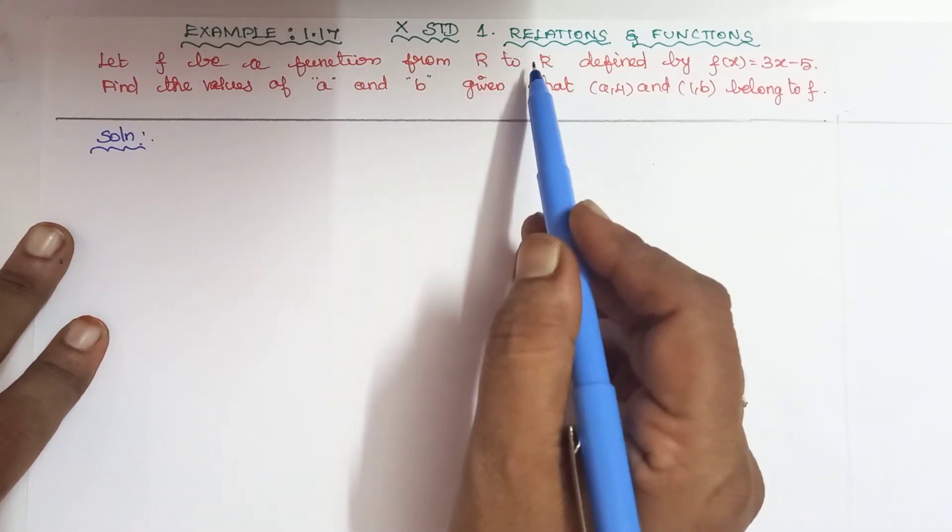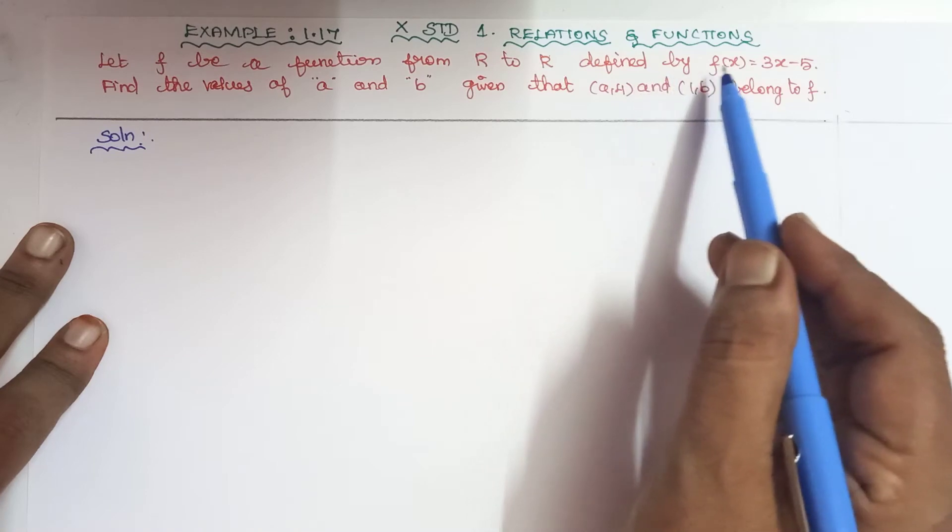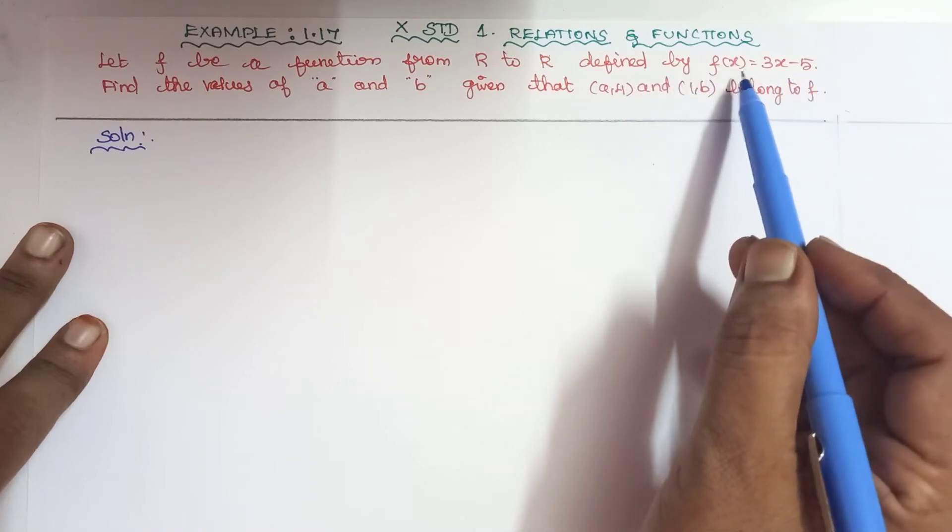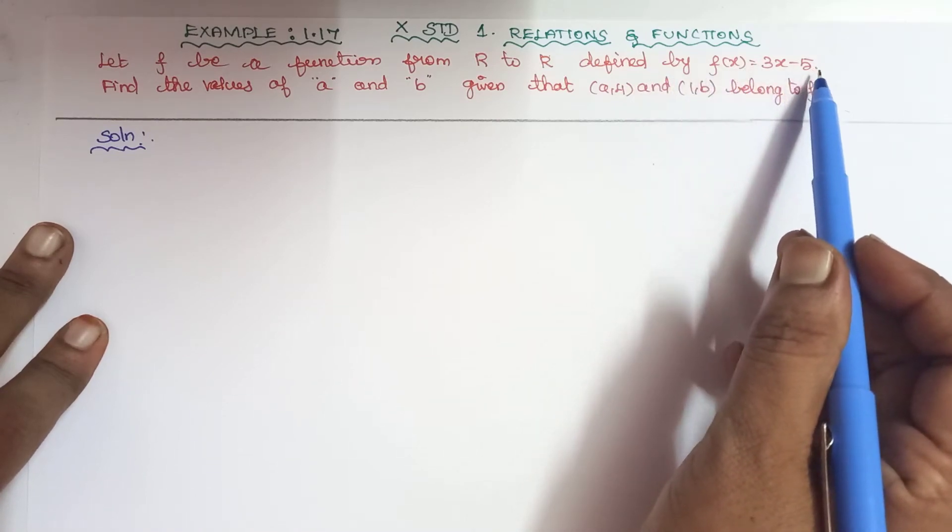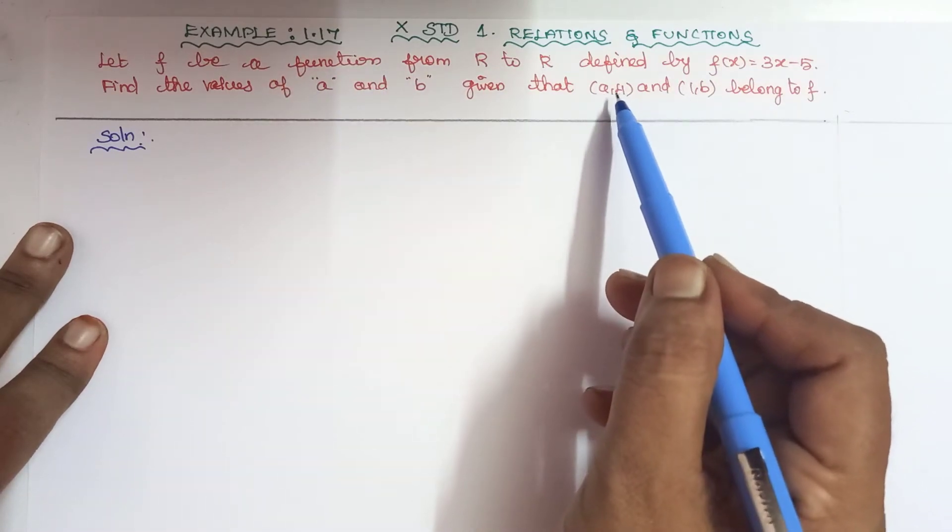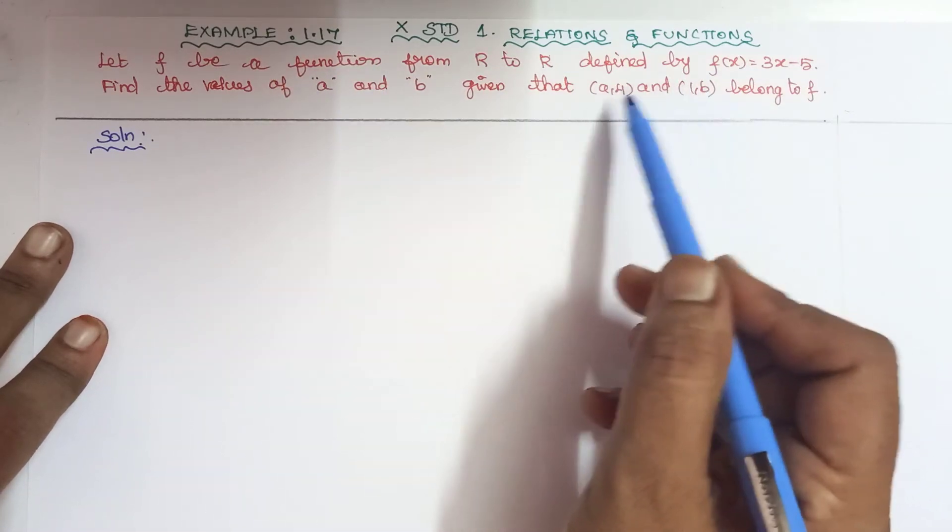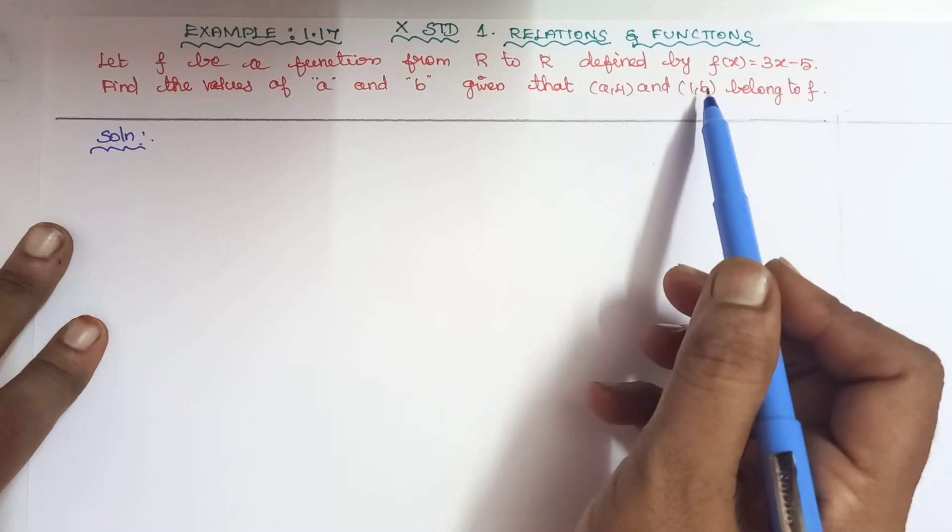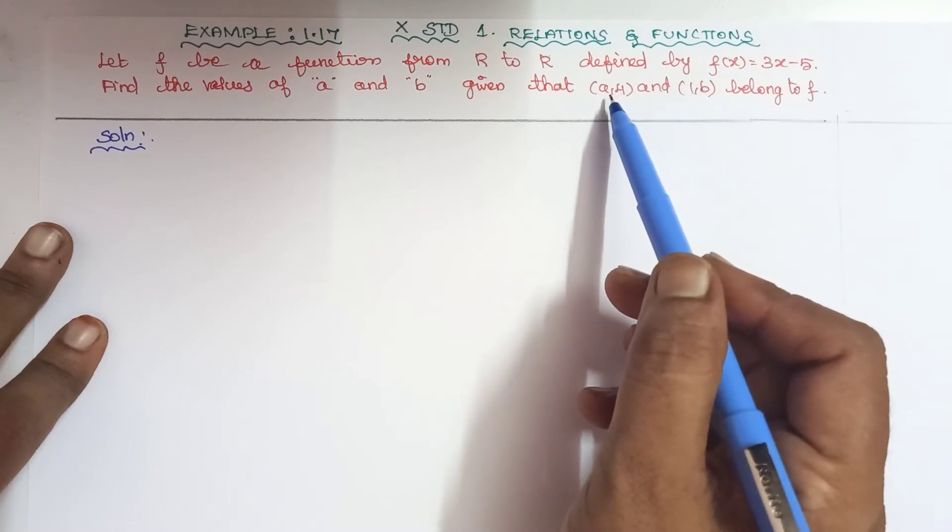That is one function f with domain and codomain as real numbers. We are required to find the range. The relation is f(x) = 3x - 5. The ordered pairs are given: (a, 4) and (1, b), and the parallel variable values are required to find out.